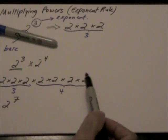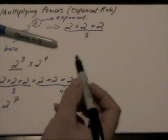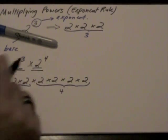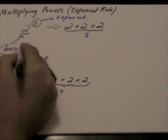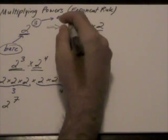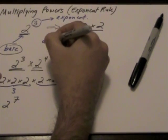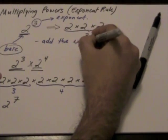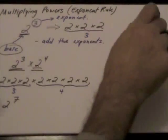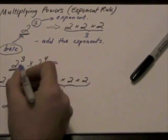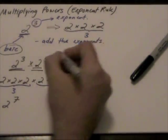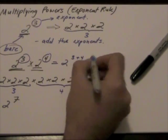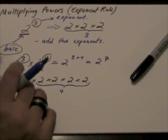We don't have to do all this to get our answer. Whenever we are multiplying powers, as long as they have the same base, we just add the exponents. In this example, we keep the base which is 2, and add our exponents, 3 plus 4, which gives us 2 to the power of 7.